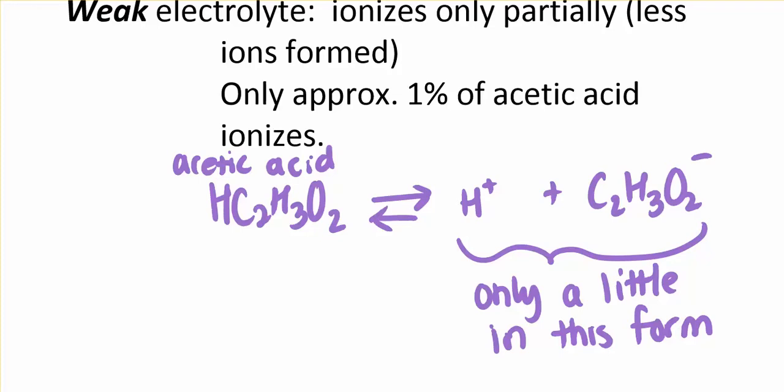Notice the arrows that I have, they go both ways. That means that once it breaks apart these two find each other sometimes and go back to being the molecular form. This is what we call a reversible reaction and so it also gives you another way to tell if it's strong or weak. On the weak electrolytes the arrows go both ways and that is why only a little bit of it will be in the ion form. On the strong the arrow only goes forward and that means when it breaks apart it stays apart.